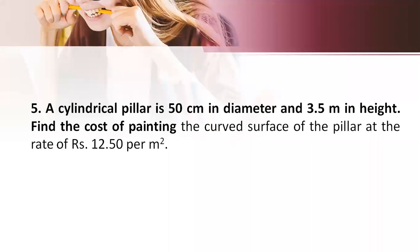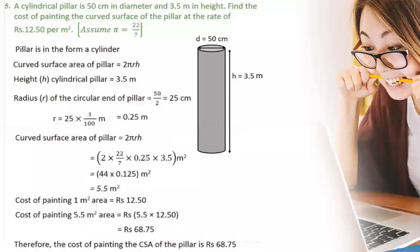Now let us see the fifth problem. A cylindrical pillar is 50 cm in diameter and 3.5 meters in height. We need to find the cost of painting the curved surface of the pillar at the rate of rupees 12.50 per meter square. So here we are given a cylindrical pillar with a diameter of 50 cm and height 3.5 meters. We need to find the cost of painting the curved surface area. So the curved surface area is equal to 2πrh, and the height of the cylindrical pillar is 3.5 meters.